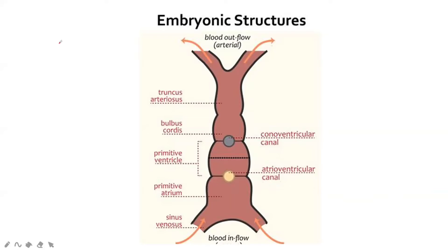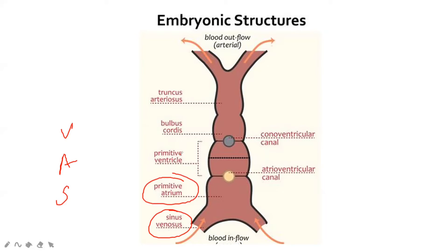This is very important. You have to tell what structures are formed by which parts of the embryonic tube. Remember this mnemonic: TB-VAS. That is: sinus venosus, atrium, then ventricle — these are the two primitive structures — then above that is truncus arteriosus or bulbus cordis. TB-VAS is the sequence of the tube.